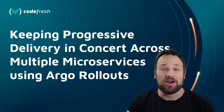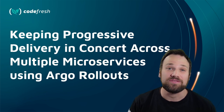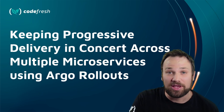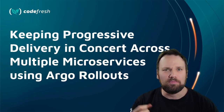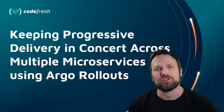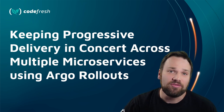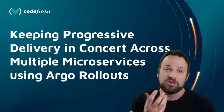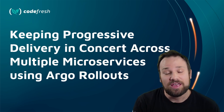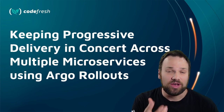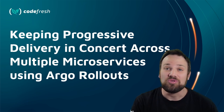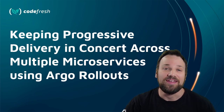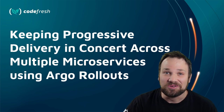The topic is really about how do you do progressive delivery with multiple applications working together at the same time. Does this require a complex service mesh or anything like that? That's what I'll be covering. We're going to do it using Argo Rollouts in a declarative way. We'll show you how the GitOps aspect comes in, and you can do all of this declaratively.